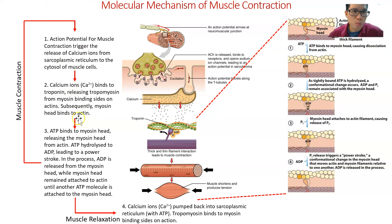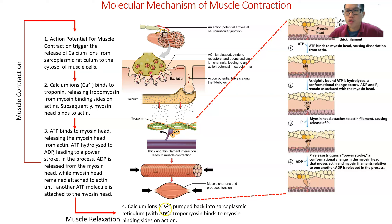This cycle repeats again and again during muscle contraction. During muscle relaxation, the calcium ions are removed by the calcium pump, which pumps calcium back into the sarcoplasmic reticulum. Once there is no calcium, troponin changes conformation again and tropomyosin blocks the myosin binding site, so the myosin head can no longer bind to the actin — the muscle relaxes.